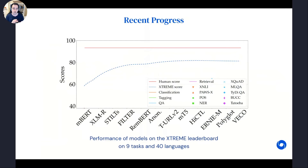Looking at the average performance on this benchmark, we've seen steady and continuous progress from multilingual BERT all the way to more recent methods. However, recently this progress has arguably slowed down compared to the earlier jumps in performance, and there still remains a large gap compared to human-level performance in terms of transferring to many different languages.